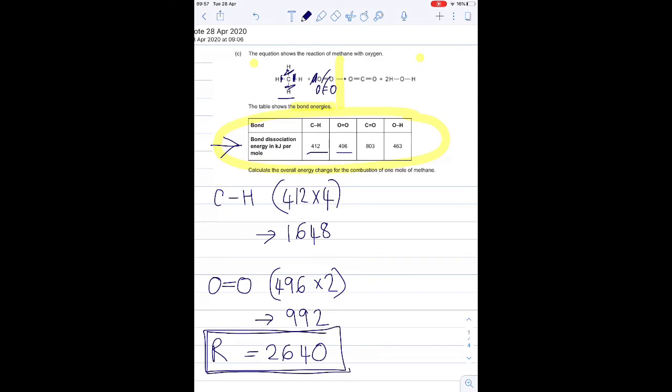Then I'm going to look at the products. I've got a C double bond O. It doesn't matter if it's O double bond C or C double bond O - doesn't matter which way you read it. It's still the exact same bond, a carbon attached to an oxygen. Don't let that confuse you. That is worth 803, and I've got one, two of those. I've got 803 times two on my calculator - that's 1606.